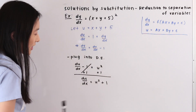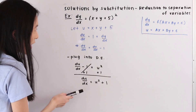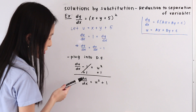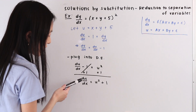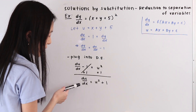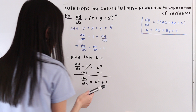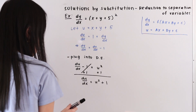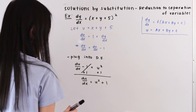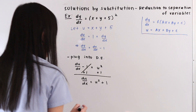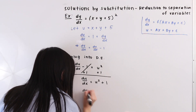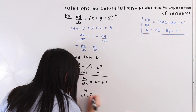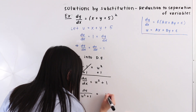We've reduced our differential equation into a separation of variables problem. So let's get all our u variables on one side and all of our x variables on the other side. We divide by u squared plus 1 and multiply by dx, giving us du over u squared plus 1 is equal to dx.